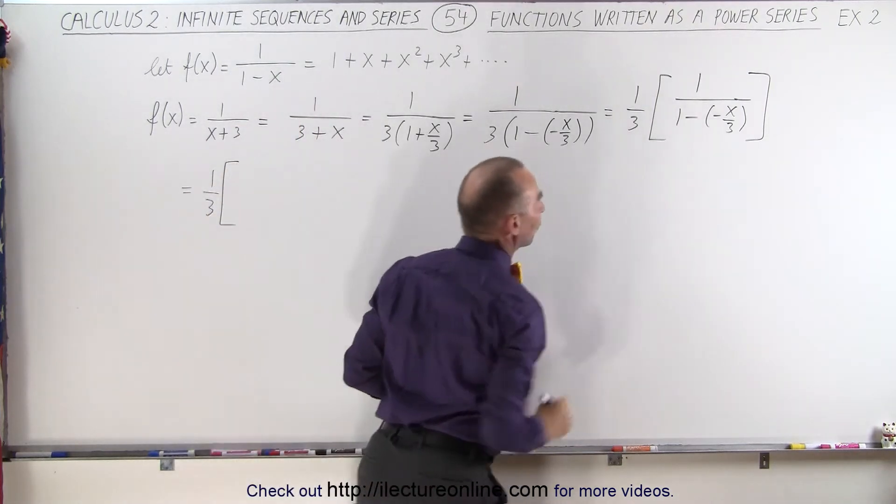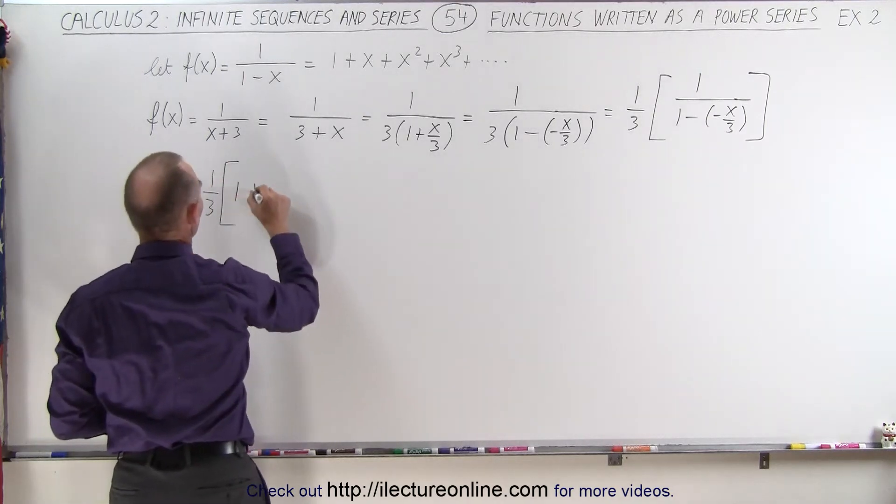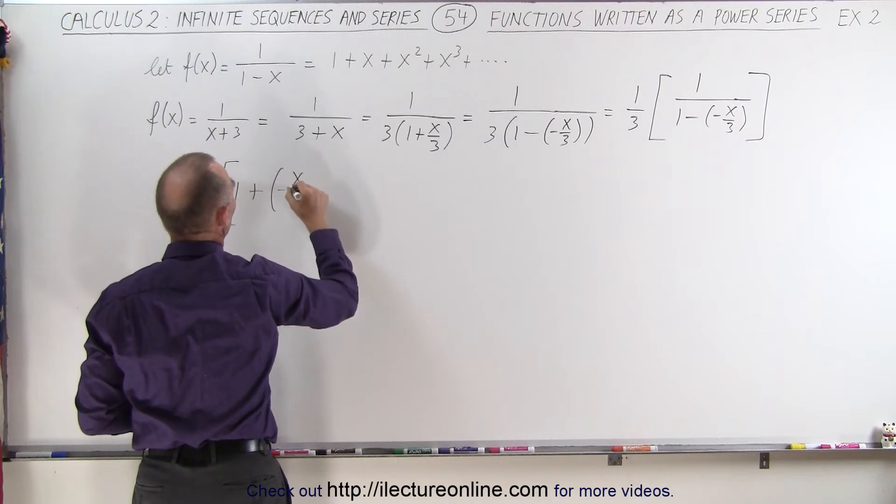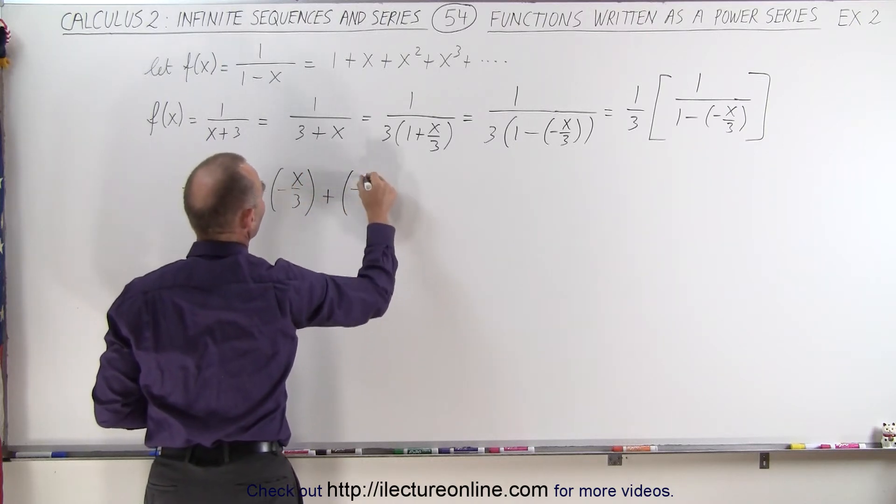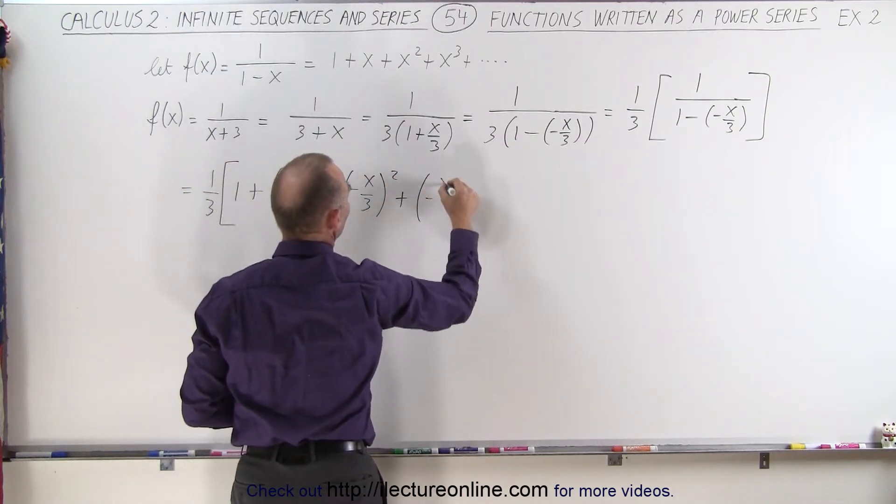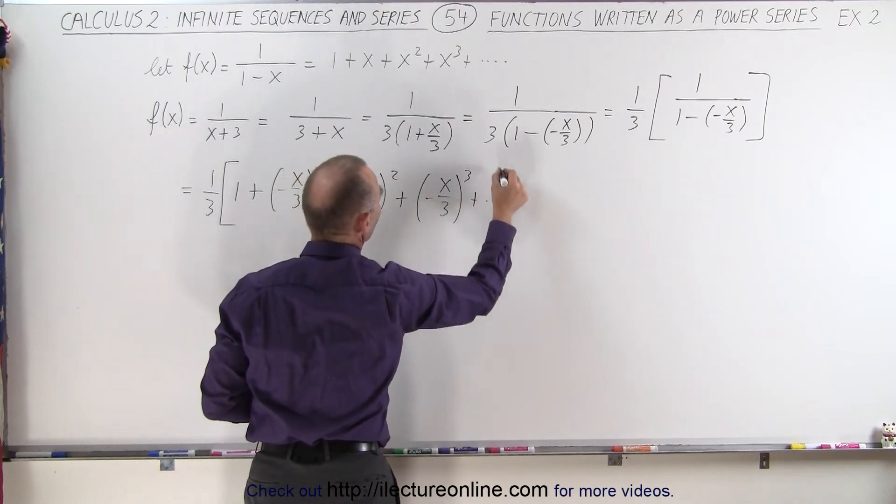we have a negative x over 3. So let's see what that looks like. So we have 1 plus, instead of x, we write a negative x over 3 to the first power, plus a negative x over 3 to the second power, plus a negative x over 3 to the third power, and so forth.